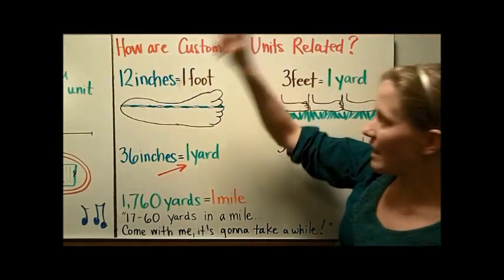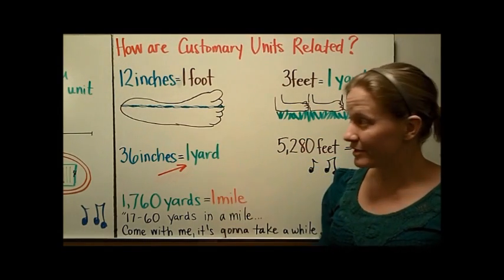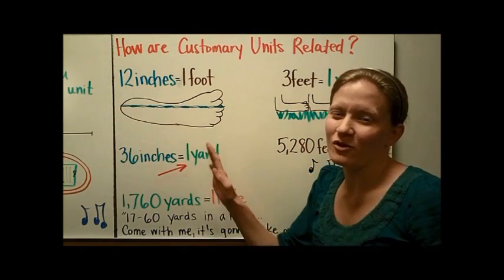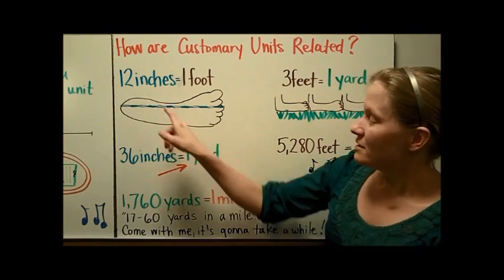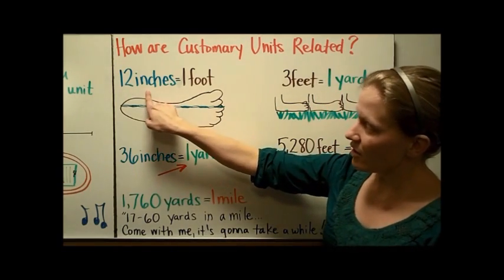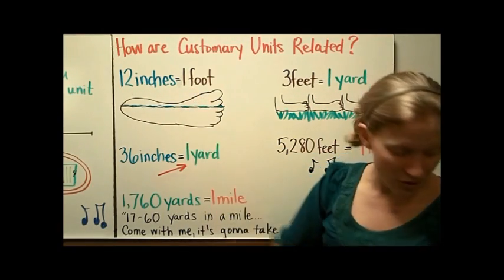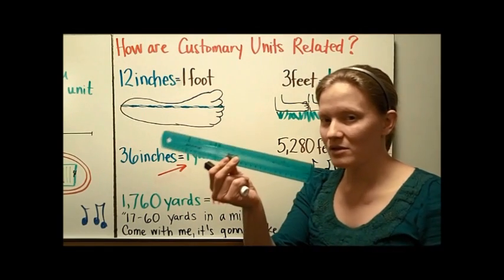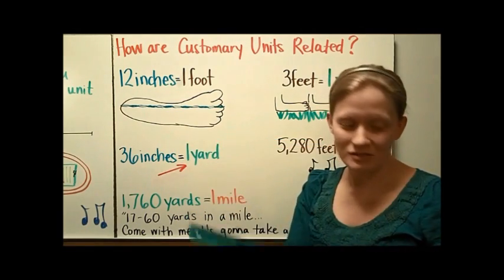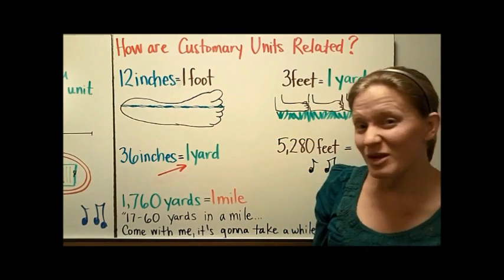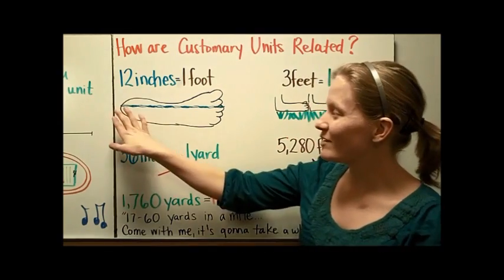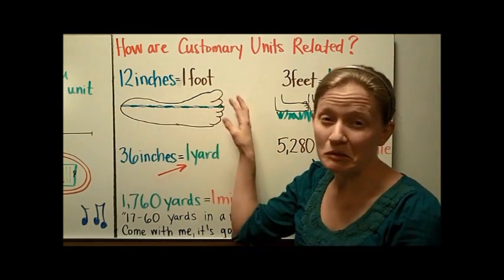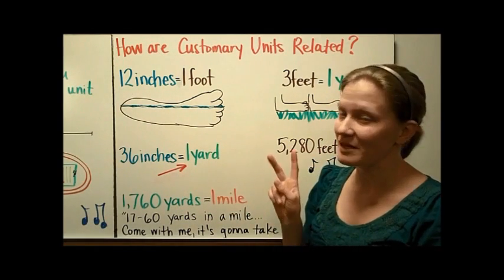Next, let's talk about how customary units are related — we have to know how we can go back and forth from one unit to another. There are 12 inches in one foot. If you have a regular classroom ruler, there are 12 inches in it. If you need a picture to remember, you might think about a foot with 12 inchworms going across it.